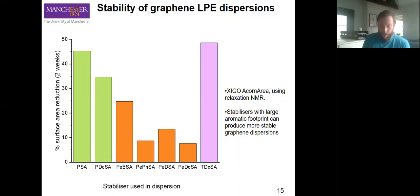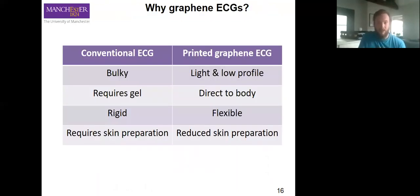Why do we want to make these into ECGs once we are LPE? Because printed graphene has the potential to bring some real advantages to a traditional ECG. Conventionally it's quite bulky. We can move towards light and low profile. If you can basically just put what feels like a piece of paper on you.